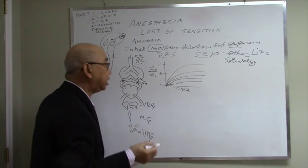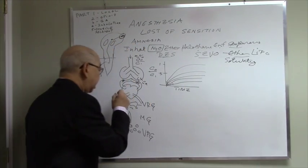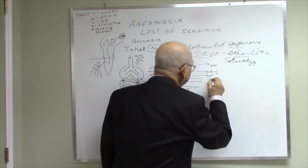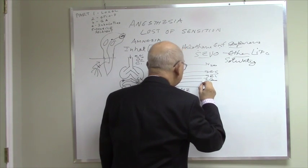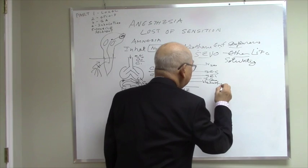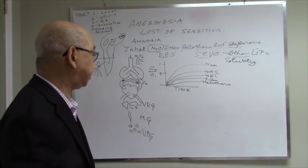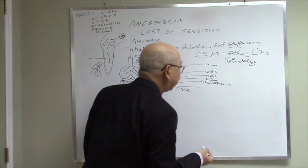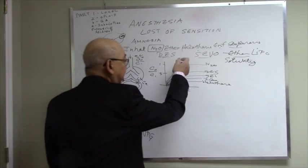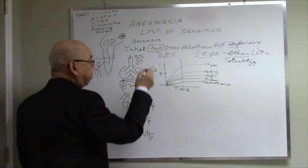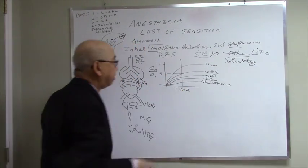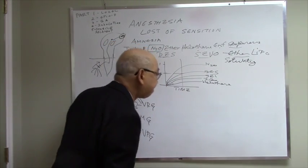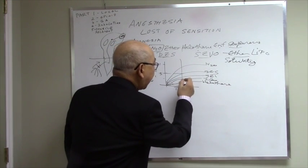The more insoluble the agent, the faster the curve rises because the body reaches saturation faster. Looking at the agents in order of solubility: nitrous oxide, desflurane, sevoflurane, isoflurane, halothane. Desflurane has become popular because it is less soluble and the FA/FI ratio rises faster. For example, at a given point in time, if you give 5% desflurane you might only achieve 0.5, so essentially 2.5% alveolar concentration — because the ratio is only half. For sevoflurane and isoflurane it is even less.